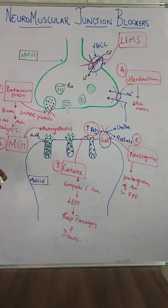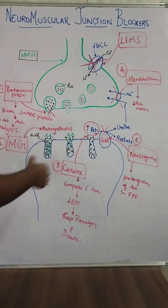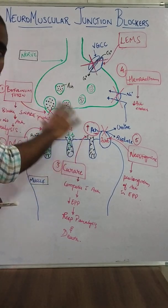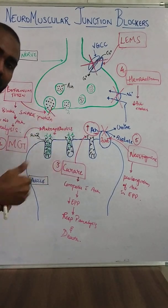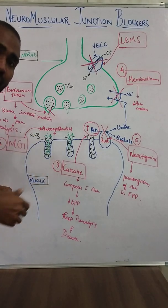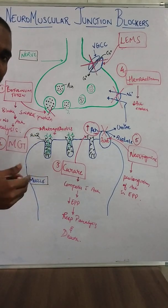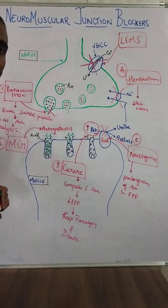So we have discussed today the neuromuscular junction blockers: botulinum toxin, myasthenia gravis, curare, hemicholinium, neostigmine, and Lambert-Eaton Myasthenic Syndrome. In the next video we'll be discussing skeletal muscle contraction. Thank you.